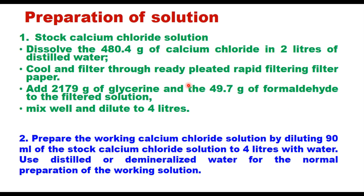Two solutions are prepared for the test. The stock calcium chloride solution is made by dissolving 480.4 g of calcium chloride in 2 liters of distilled water, cooling and filtering through rapid filter paper, then adding 2179 g of glycerin and 49.7 g of formaldehyde, mixing well, and diluting to 4 liters. The working calcium chloride solution is prepared by diluting 90 ml of the stock solution to 4 liters with distilled or deionized water.